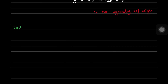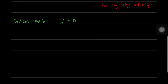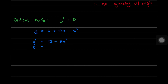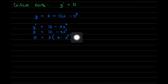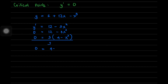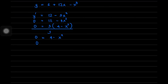The next step is to determine the critical points by setting y prime equal to 0. For y equals 2 plus 12x minus x cubed, setting y prime to 0 gives 12 minus 3x squared equals 0. Factoring out 3, we get 4 minus x squared equals 0. Dividing both sides by 3 and factoring, we get (2 minus x)(2 plus x) equals 0.